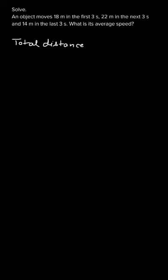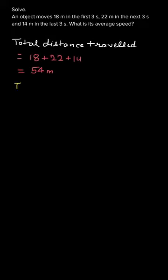We will start by writing the total distance traveled by the body. We can clearly see that the total distance traveled will be 18 plus 22 plus 14, which is basically 54 meters.